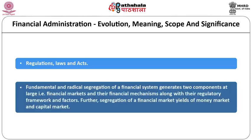Fundamental and radical segregation of the financial system generates two components at large — that is, financial markets and their financial mechanism along with their regulatory framework and factors. Further, segregation of a financial market yields money market and capital market, which are relevant to a financial system.